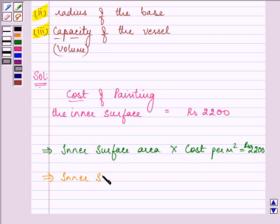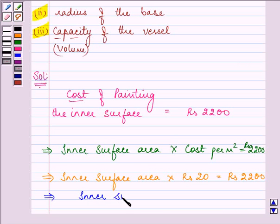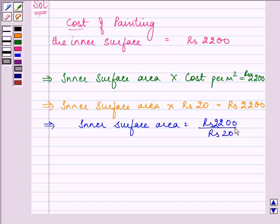Also, we know that inner surface area is what we need to find out. Cost per meter square is given as rupees 20 and the total cost is given as 2200. So this implies inner surface area, that is the inner curved surface area of the vessel, is equal to rupees 2200 divided by rupees 20, that is equal to 110 meter square. So this is the answer to the first part.